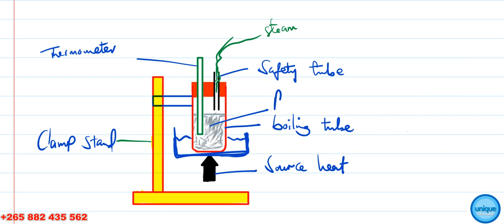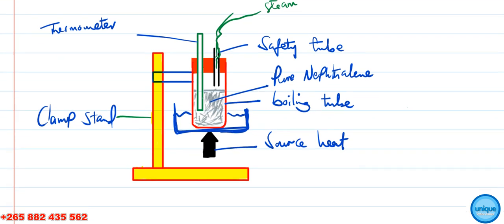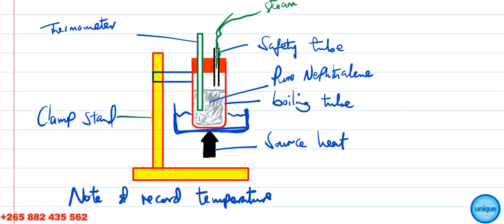The substance should be pure naphthalene. Heat the pure naphthalene and note and record the temperature at which the naphthalene has completely melted — that is, the temperature at which it transitions from solid state to liquid state.